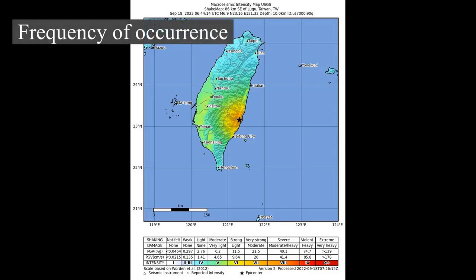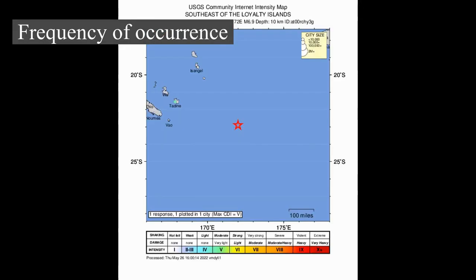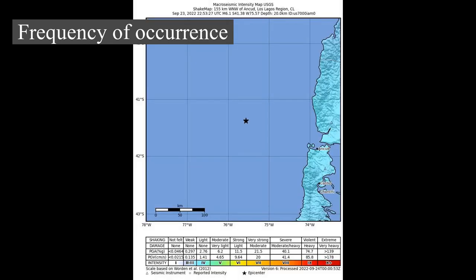Frequency of occurrence: It is estimated that around 500,000 earthquakes occur each year, detectable with current instrumentation, of which about 100,000 can be felt. Minor earthquakes occur nearly constantly around the world, in places like California and Alaska in the U.S., as well as El Salvador, Mexico, Guatemala, Chile, Peru, Indonesia, the Philippines, Iran, Pakistan, the Azores in Portugal, Turkey, New Zealand, Greece, Italy, India, Nepal, and Japan.